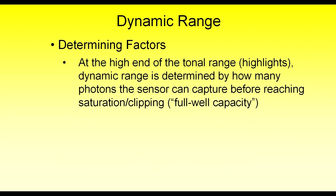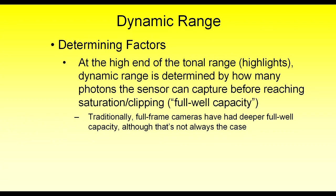There are two determining factors which establish what the dynamic range of a given camera and sensor is. At the high end of that range, at the brightest highlight area, the dynamic range is determined by how many photons the sensor can capture before reaching what's called the saturation or clipping point, which is also called the full well capacity. When the sensor captures an image, it's filling up its wells for each of the pixels, and there's a fixed limit as to how many photons each pixel can hold. Once you've reached that fullness point, any more photons that fall upon that pixel get lost. The deeper that well — the more photons it can capture — the deeper range of highlights you can capture, which extends the dynamic range on the upper end.